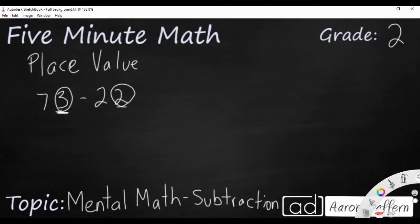So since we don't, we can break this apart because really, remember the 73 is 70 plus 3. That's how we would look at it with our expanded form. And then this 22 is 20 plus 2.